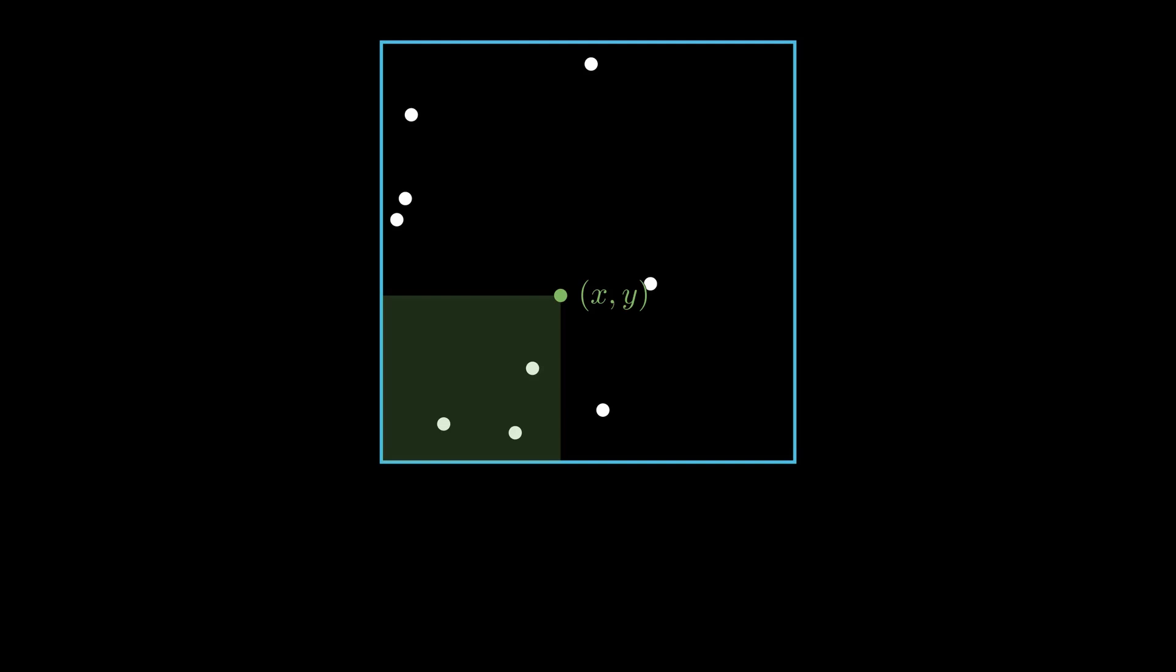Now, what is the probability of exactly k dots landing in the rectangular region formed by the lower left corner of the square and this special dot? Writing an integral for this probability is easy. Let's say the special dot landed on point xy.